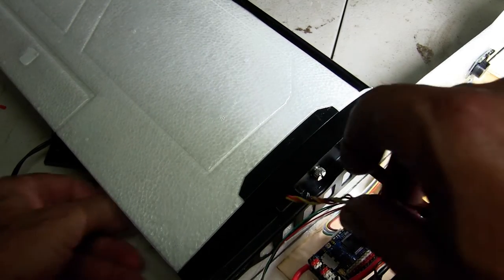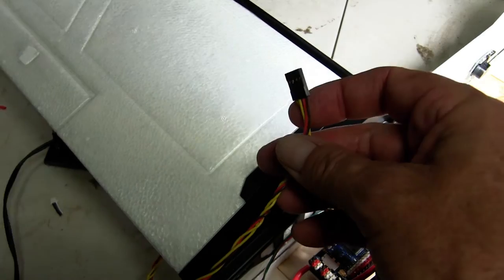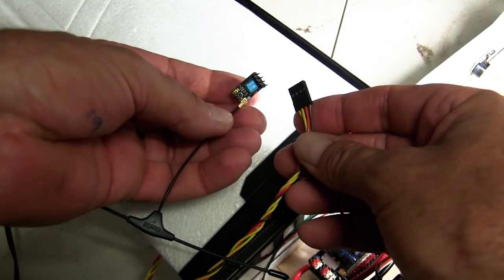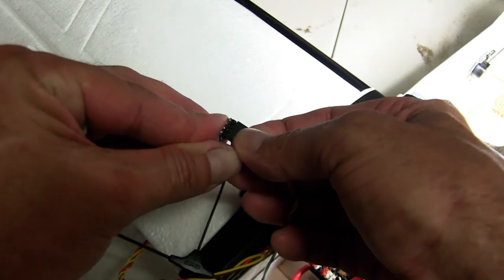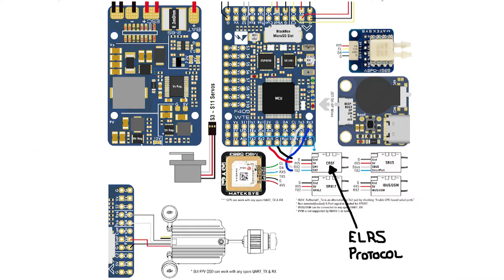We run the wiring through for the receiver. Be sure when you set the receiver up and create your wires that you are using the Crossfire protocol for ExpressLRS. This is exactly how I wired mine so you should have no dramas if you follow the same procedure.